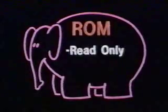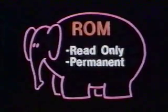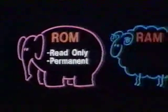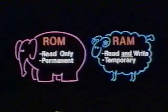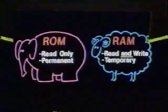So ROM is read-only memory, and it's permanent — it never forgets. Whereas RAM is both read and write memory, and it's temporary — it forgets at the flick of a switch. ROM and RAM: ROM wasn't built in a day, so it's here to stay. And RAM is here today and gone tomorrow.